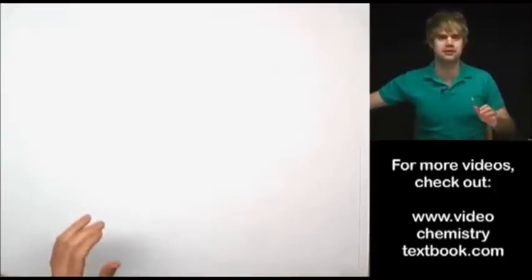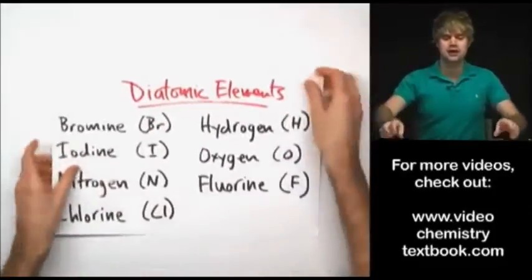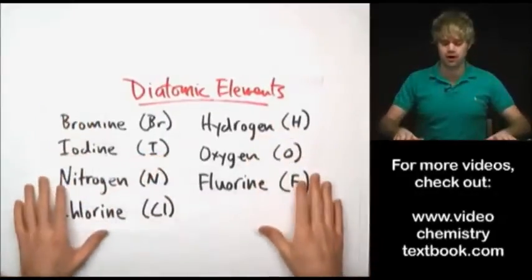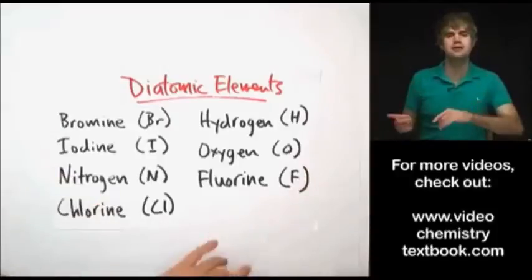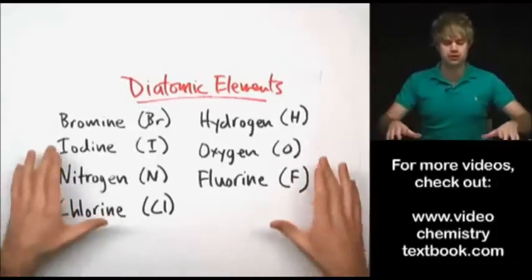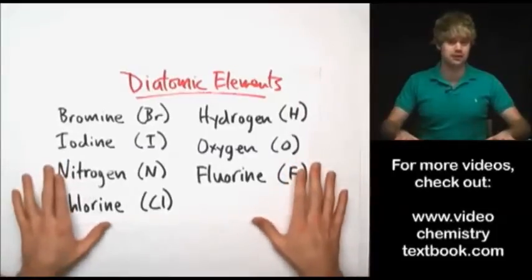So there are about a hundred elements on the periodic table and of those hundred elements, seven of them are the diatomic elements. These are the diatomic elements here and at the end of the video I'll teach you some memory tricks so that you can remember which of the elements are diatomic.